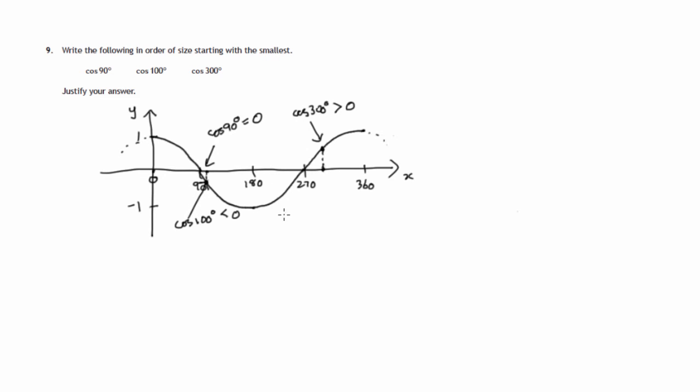And really that's all the evidence we need. That's justification for putting them in order where the smallest, cosine of 100, must be less than the cosine of 90, which has to be less than the cosine of 300.